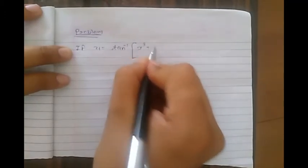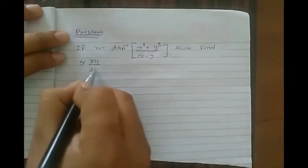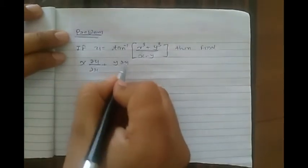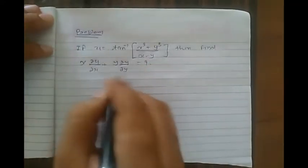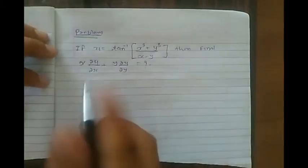Let me take one example based on Modified Euler's Theorem before discussing the proof. The problem is: if u = tan⁻¹((x³ + y³)/(x − y)), find the value of x ∂u/∂x + y ∂u/∂y.